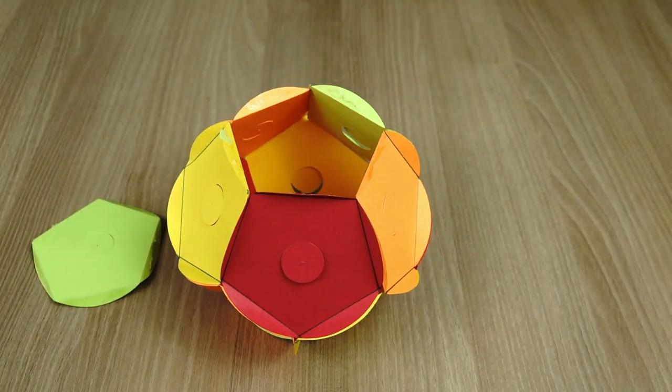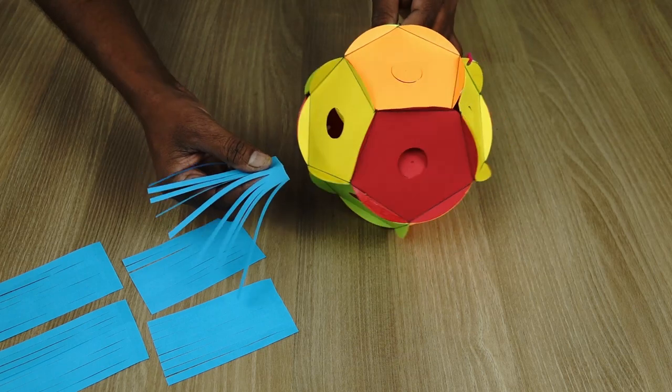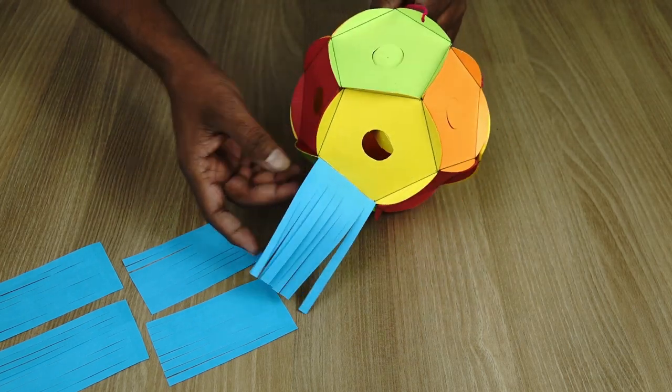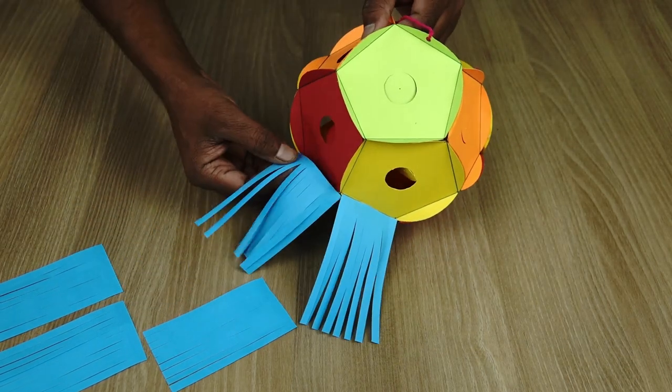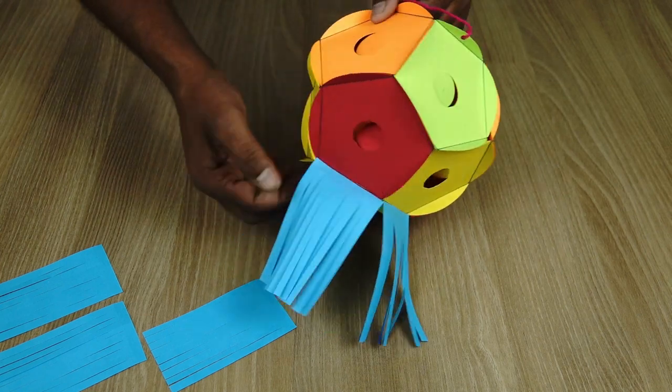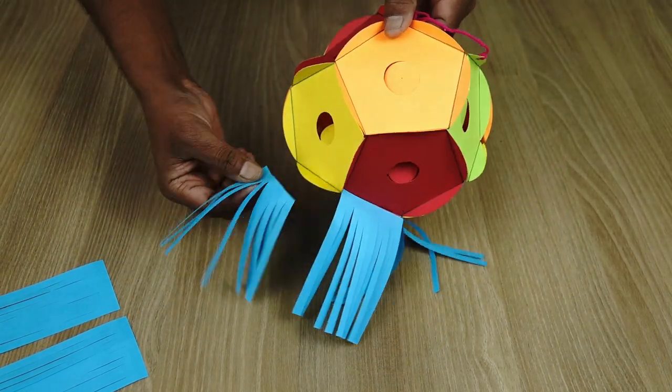In order to make the lantern we can remove one of the pentagons and then attach a frill of a different colored paper. So this will really make it into a lantern shape.